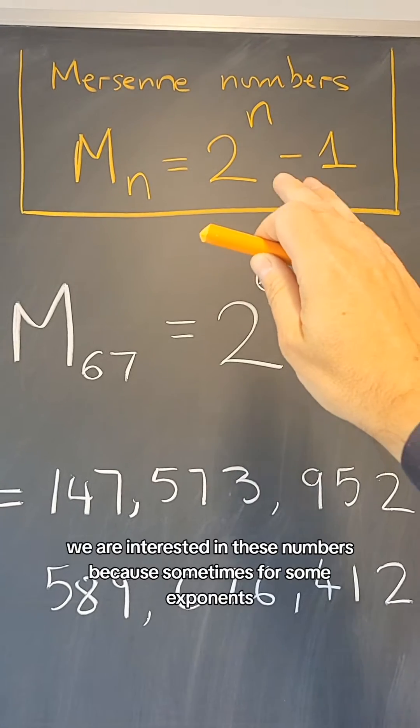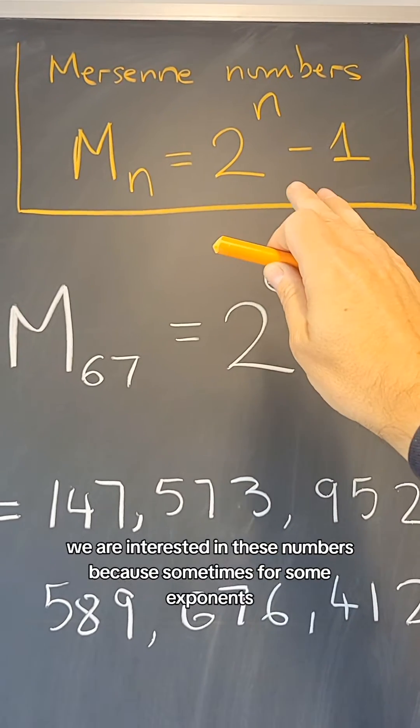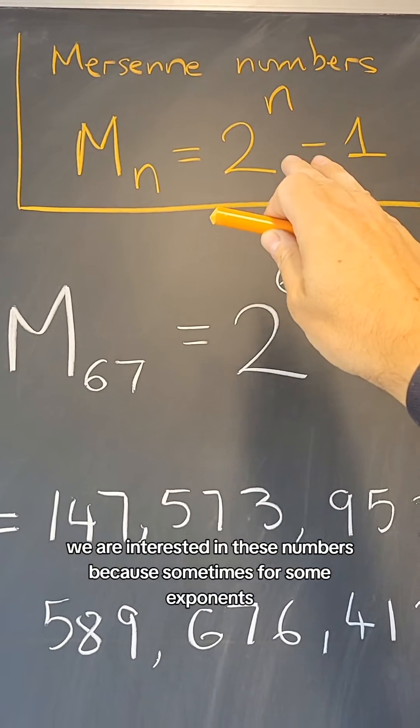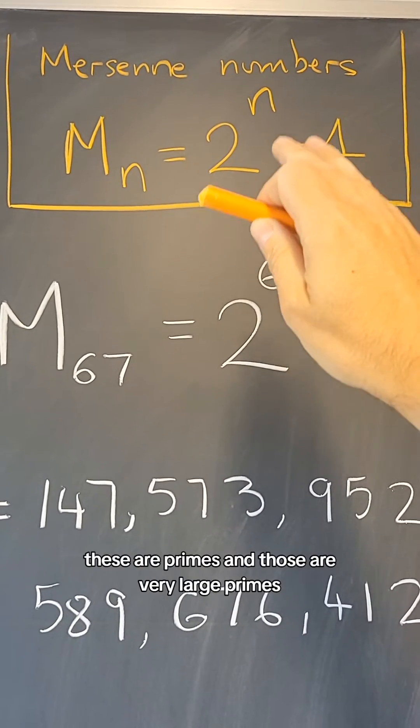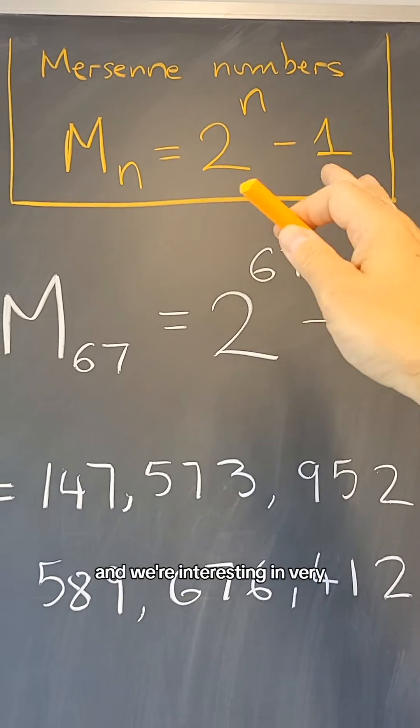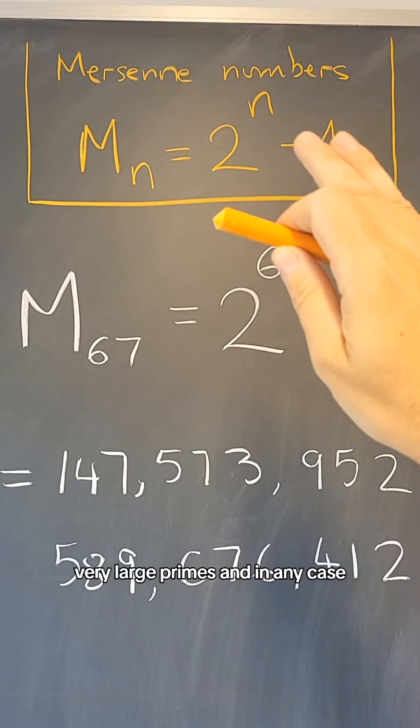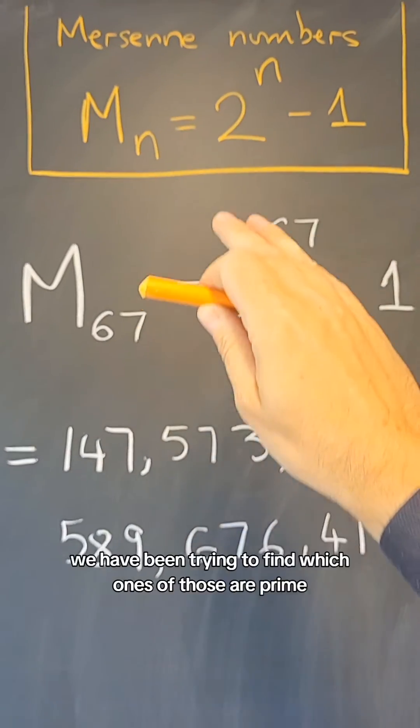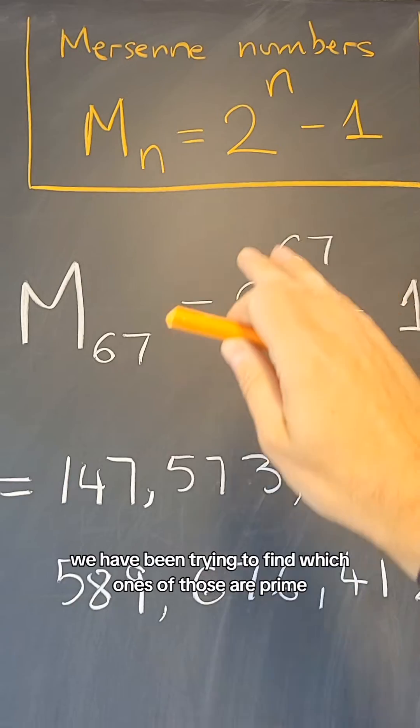But in any case, we are interested in these numbers because sometimes for some exponents n, these are primes and those are very large primes and we're interested in very large primes. And in any case, we have been trying to find which ones of those are prime.